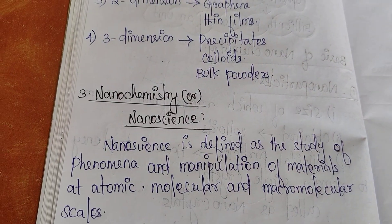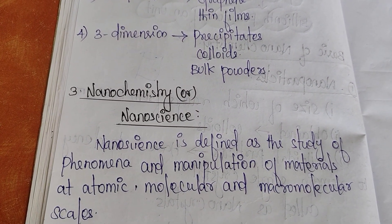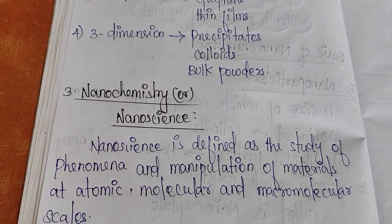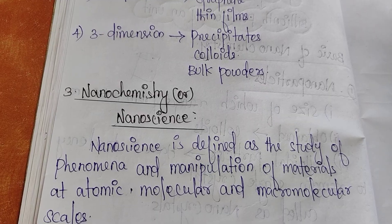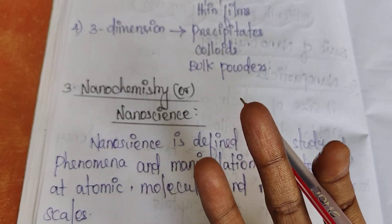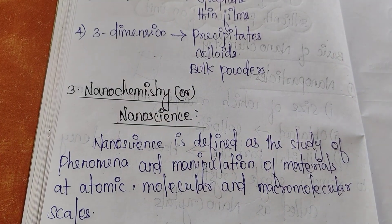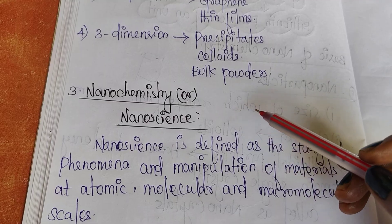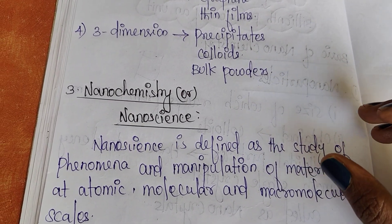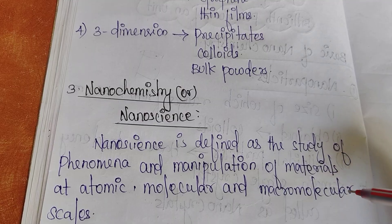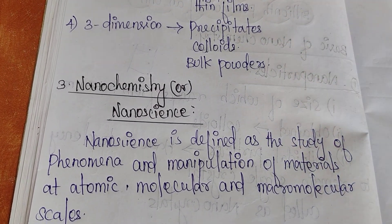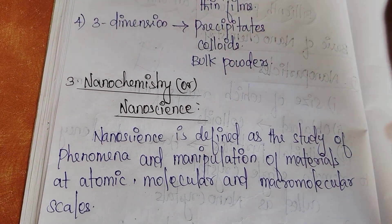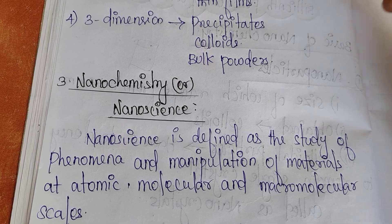Nanochemistry and nanoscience are defined as the study of phenomena and manipulation of materials at atomic, molecular, and macromolecular scales. Nanochemistry and nanoscience refer to the manipulation of materials at these scales.